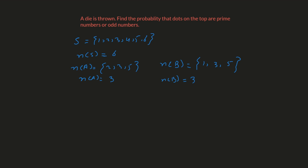Now we need to find the probability of the first event. The probability of A, by definition, is the number of elements of the event divided by the total number of elements in the sample space — that is n(A) over n(S) — which gives us three over six, or one half.